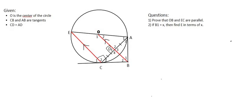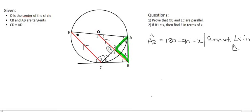The next question says that if B1 is X, so we can just put a little X over there, find E, which is over here, in terms of X. So in this triangle over here, we know that angle D3 is 90 degrees. We know that angle B1 is X. And so we can say that angle A2 is going to be equal to 180 minus 90 minus X. Why? Because of sum of angles in a triangle. And so if you simplify that, you would see that A2 is going to be equal to 90 minus X.